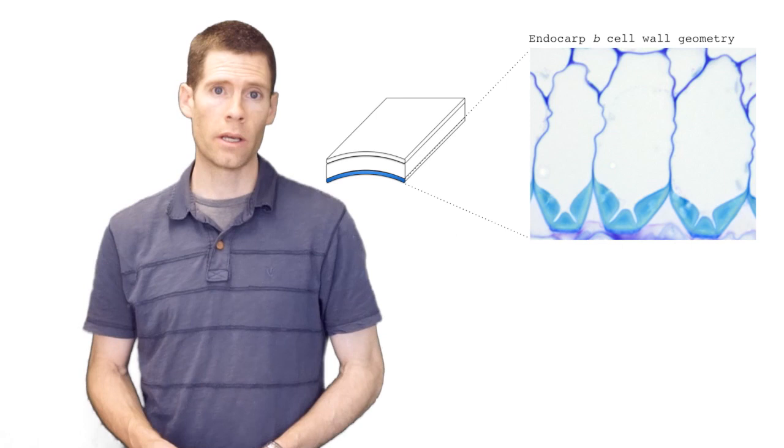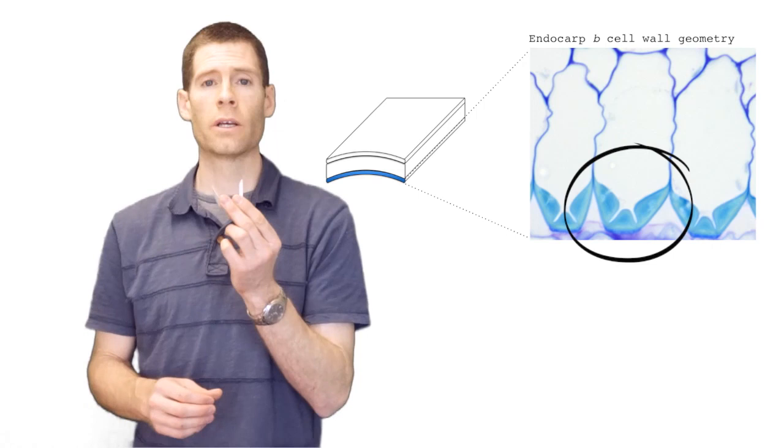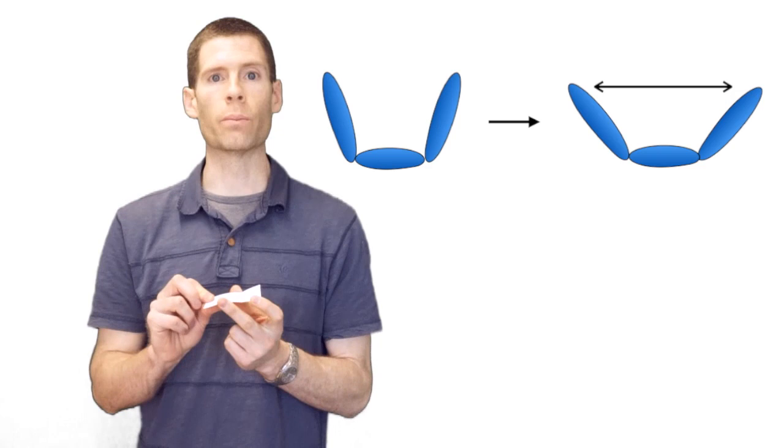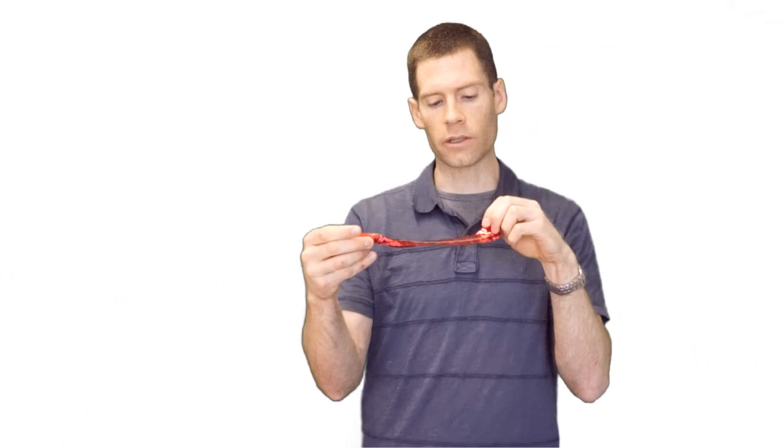This is where the endocarp cell geometry comes in. In Cardamine, the stiff lignin in the endocarp cells has the shape of a hinge. So what this hinge does is it enables the cross-section to easily flatten by the hinge simply opening. Because of this hinge geometry, the valve is actually a bit more like this party favor. So this also wants to be coiled along its length, but it can freely curve and uncurve in the cross-section.